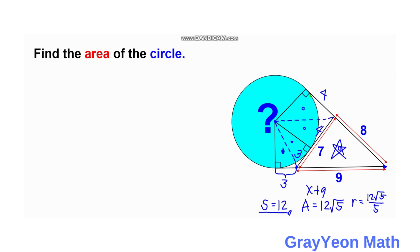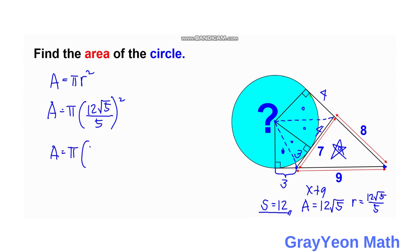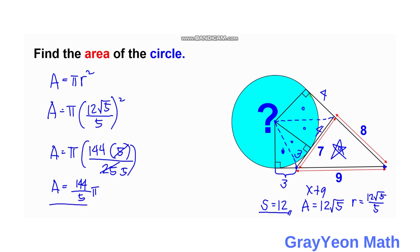Now we are ready to find the area of the circle. Area equals pi times r squared, so area equals pi times (12 square root of 5 over 5) squared. Squaring gives 144 times 5 all over 25. The 5s simplify, and the area equals 144 pi over 5 square units. That is our answer.